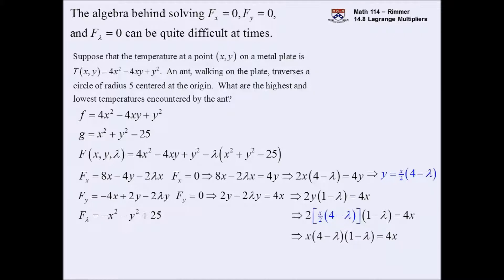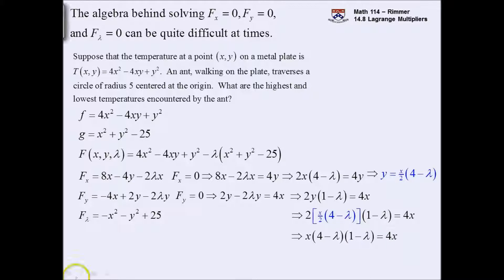We see x times something equals x times something - you want to cancel the x's. But officially, doing that means dividing by x, and it's possible x could be zero. So we need to consider that case. It's on the circle, so x = 0 is on the circle - go down that road. If you don't consider it, it'll only cost about a point, but we should.